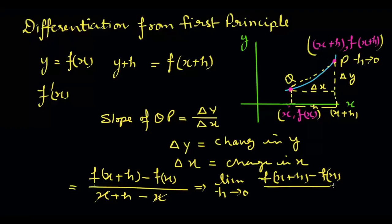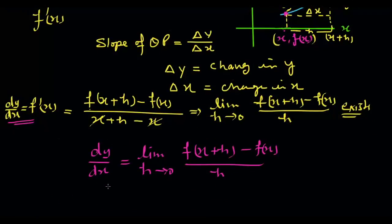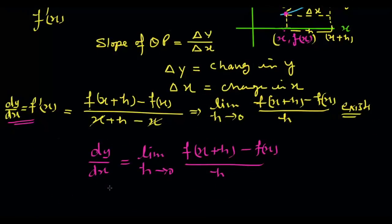We put limit h approaches to 0: f(x plus h) minus f(x) upon h. When we take this limit, if this limit exists then only the function is differentiable, and dy/dx — also written as f'(x) — is called the derivative with respect to x.